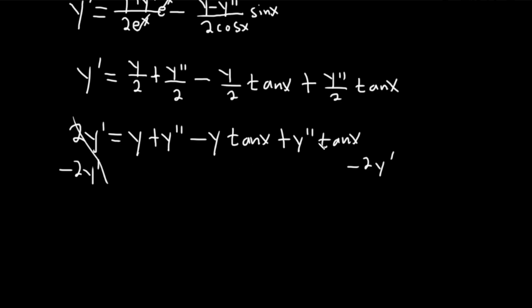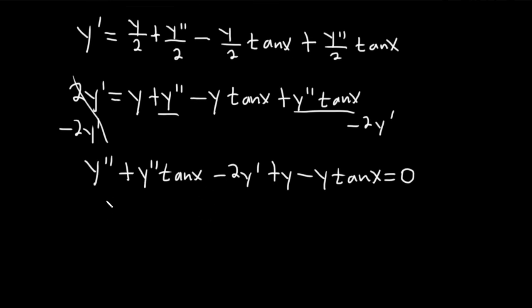So I'm going to write it like this: y double prime plus y double prime tan x, writing the higher order derivative first. And then we have minus 2y prime. And then we're left with plus y minus y tan x. And that's equal to zero. And now we can clean it up even more. We can write this as (1 plus tan x) y double prime minus 2y prime plus (1 minus tan x) y equals zero. So a little bit nicer there.